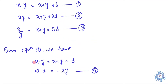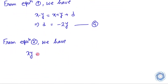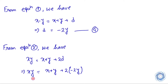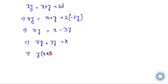Now from equation 2, we substitute the relation d equals minus 2y, and from here we derive that y equals x over x plus 3. Let us take this as equation 5.